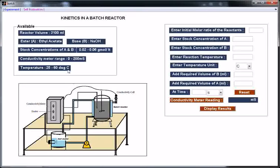Available reactor volume is 3100 ml and stock concentration of ethyl acetate and sodium hydroxide available are 0.02 to 0.06 gmol per liter. Conductivity meter range is 0 to 200 mS. Temperature range is 25 to 60 degree Celsius.